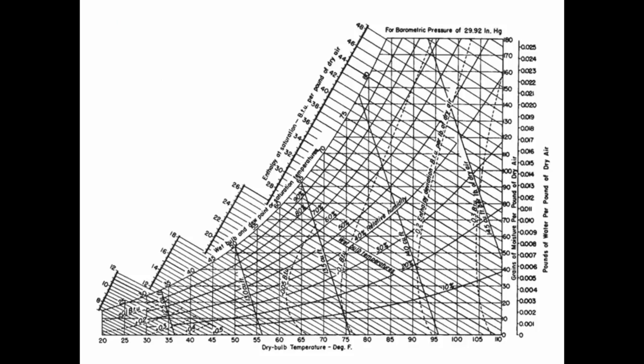This is the chart given by the question. It has lots of lines and labels which make it confusing to read. At the top, it specifies the pressure for which it can be used. Since the question didn't tell us the pressure of the air, we can assume one atmosphere, which is 29.92 inches of mercury. When the pressure has been specified, we only need to specify two other properties to be able to find all the other properties from the chart.